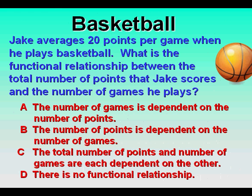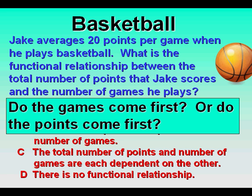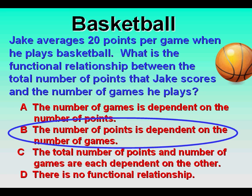Jake averages 20 points per game when he plays basketball. What is the functional relationship between the total number of points that Jake scores and the number of games he plays? The first thing we need to ask is: what comes first? What comes first will be the independent quantity. Do the games come first or do the points come first? When he looks at the calendar, what is scheduled? Games are scheduled first, so games are the independent quantity. Therefore, the number of points is dependent on the number of games.